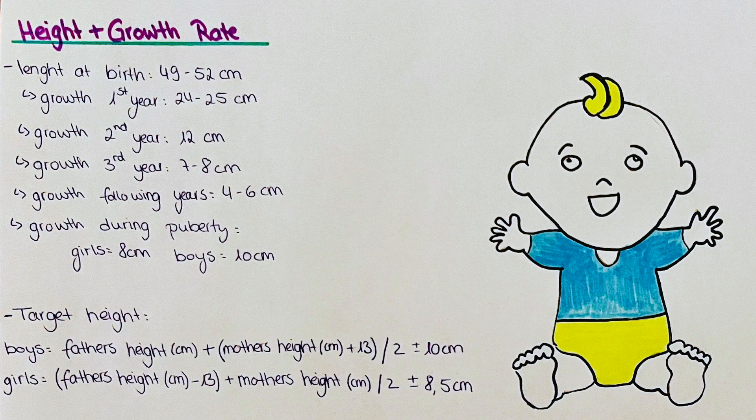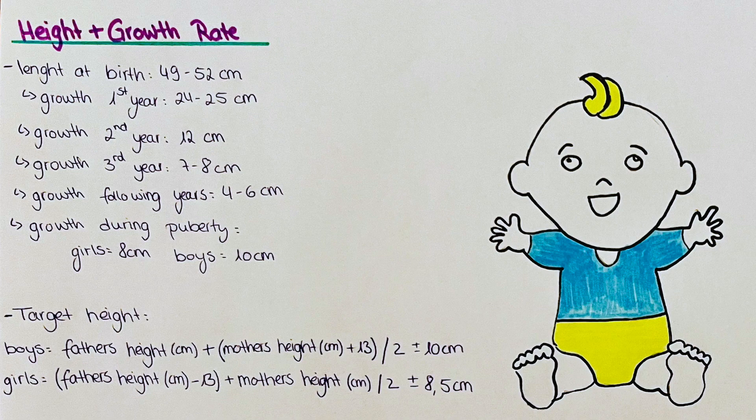For girls it's a little bit different. We take the father's height and then we minus 13 plus the mother's height, then we divide it by 2. And then the plus minus is 8.5 instead of 10, so the range is a little bit smaller.